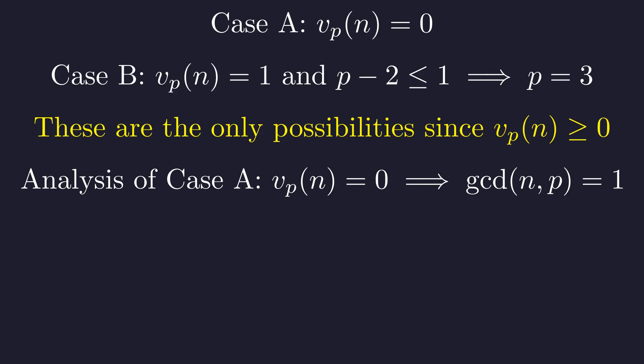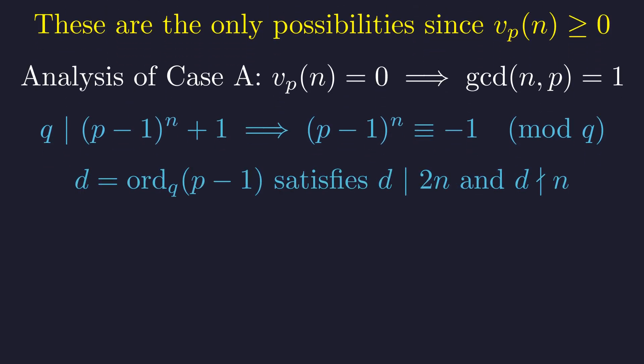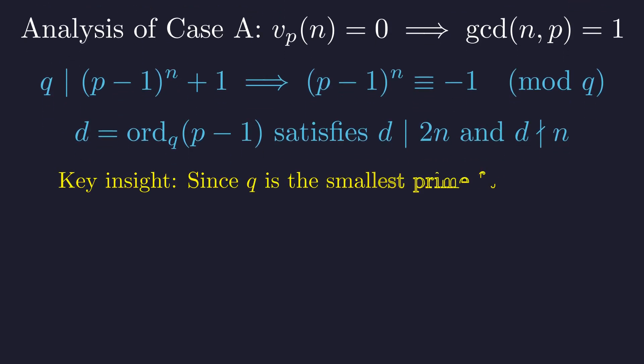Let's investigate case A. v_p(n) equals 0 means that p is not a prime factor of n; they are coprime. This gives us the same congruence: (p-1)^n ≡ -1 (mod q). Let d be the multiplicative order of p-1 modulo q. The congruence implies that d must divide 2n, but d cannot divide n. Here is the critical insight.